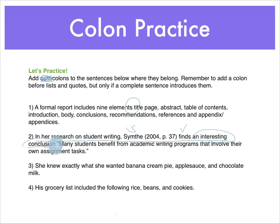Number three, 'She knew exactly what she wanted:' banana cream pie, applesauce, and chocolate milk. There's a list of things she wants, and right before it is a complete sentence — 'She knew exactly what she wanted' — so I need to put a colon right there. And then lastly, number four, 'His grocery list included the following:' rice, beans, and cookies. Notice how similar number four is to number three — we have our list of three items at the end, and at the beginning a complete sentence, so just like number three, I have my colon right there.